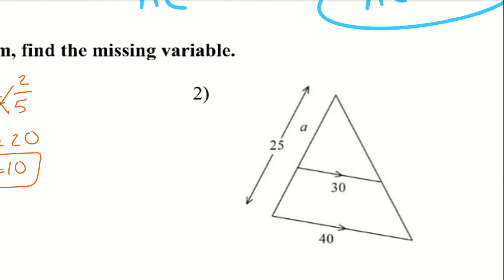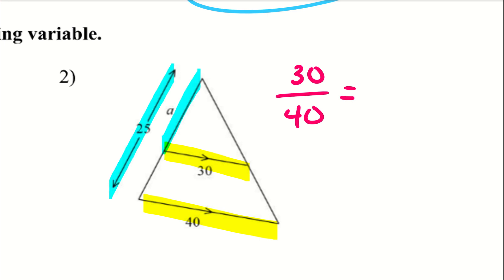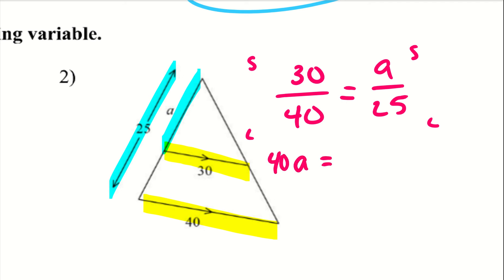Let's go ahead and take a look at example 2. I'm going to do the same thing — start with the parallel lines: 30 and 40. So 30 over 40 equals A over 25, small triangle over large triangle — the small triangle on top and the larger triangle on the bottom, with corresponding parts up and down. So I cross-multiply: 40A equals 750. When I divide by 40, I get 18.75.